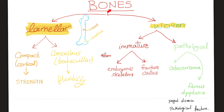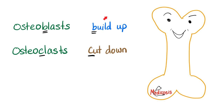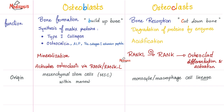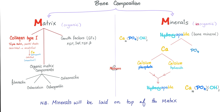If you are a healthy person, you want your bones to be lamellar and not woven. Osteoblasts build up bone, but osteoclasts cut down bone. When you cut down bone, you release calcium from within the bone into the bloodstream. Your bone is made of M and M — matrix and minerals. The matrix contains type 1 collagen, growth factors, and organic matrix. The minerals are calcium and phosphate, known as hydroxyapatite.